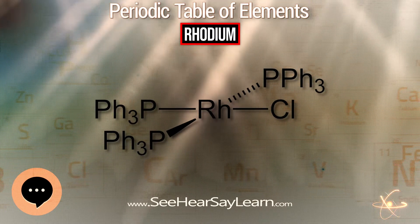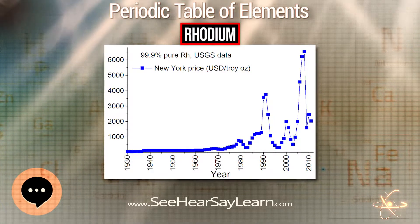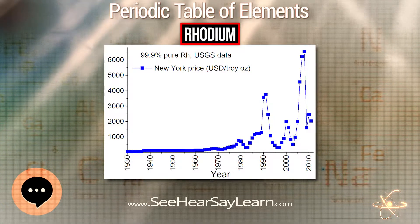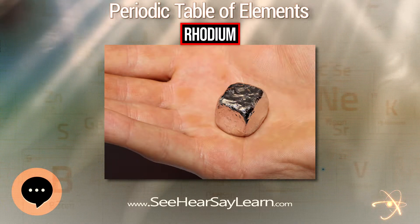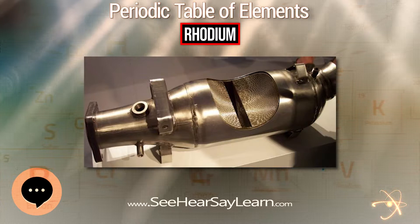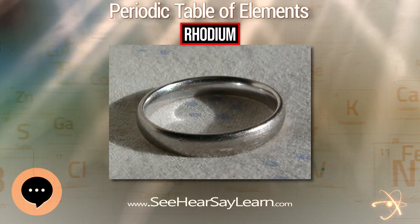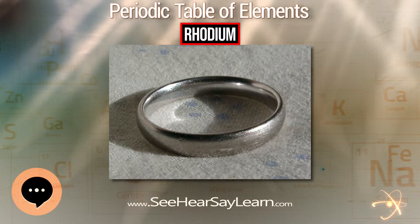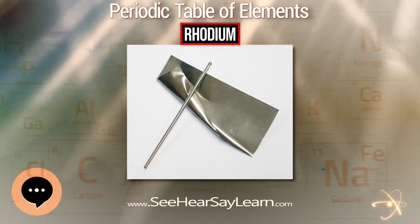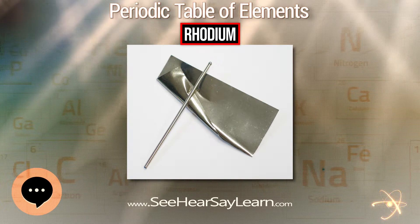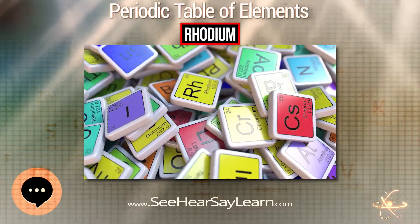Rhodium is a fission product of uranium-235; each kilogram of fission product contains a significant amount of the lighter platinum group metals. Used nuclear fuel is therefore a potential source of rhodium, but the extraction is complex and expensive. The presence of rhodium radioisotopes requires a period of cooling storage for multiple half-lives of the longest-lived isotope. These factors make the source unattractive and no large-scale extraction has been attempted.